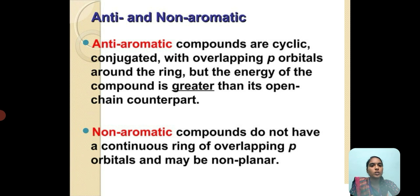Anti-aromatic compounds are cyclic and conjugated with overlapping p orbitals around the ring, but their energy is greater than their open-chain counterparts. Non-aromatic compounds do not show a continuous ring of overlapping p orbitals and may be non-planar.